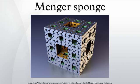In mathematics, the Menger sponge is a fractal curve. It is a three-dimensional generalization of the Cantor set and Sierpinski carpet. It was first described by Carl Menger in 1926, in his studies of the concept of topological dimension.